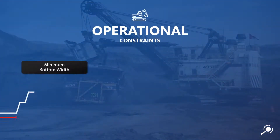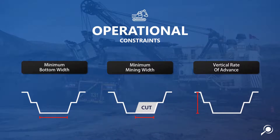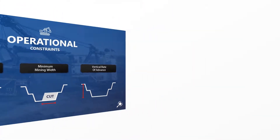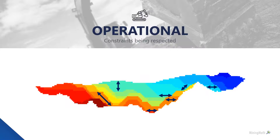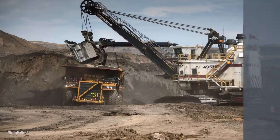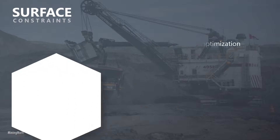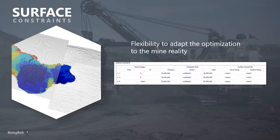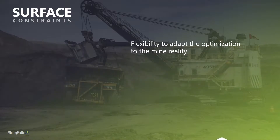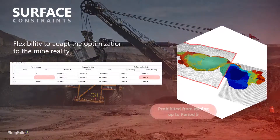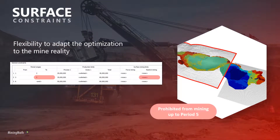One of the greatest achievements of SimSched DBS is its ability to control geometric parameters, producing solutions that are more realistic. You can specify a minimum bottom width, a minimum mining width, and a maximum sinking rate. The surface constraints provide flexibility to the user to customize the physical areas in which the optimization will occur. When forcing mining, all blocks in the green area must be extracted until the end of period 2. When restricting mining, the optimizer is prohibited from mining below the red region until period 5.